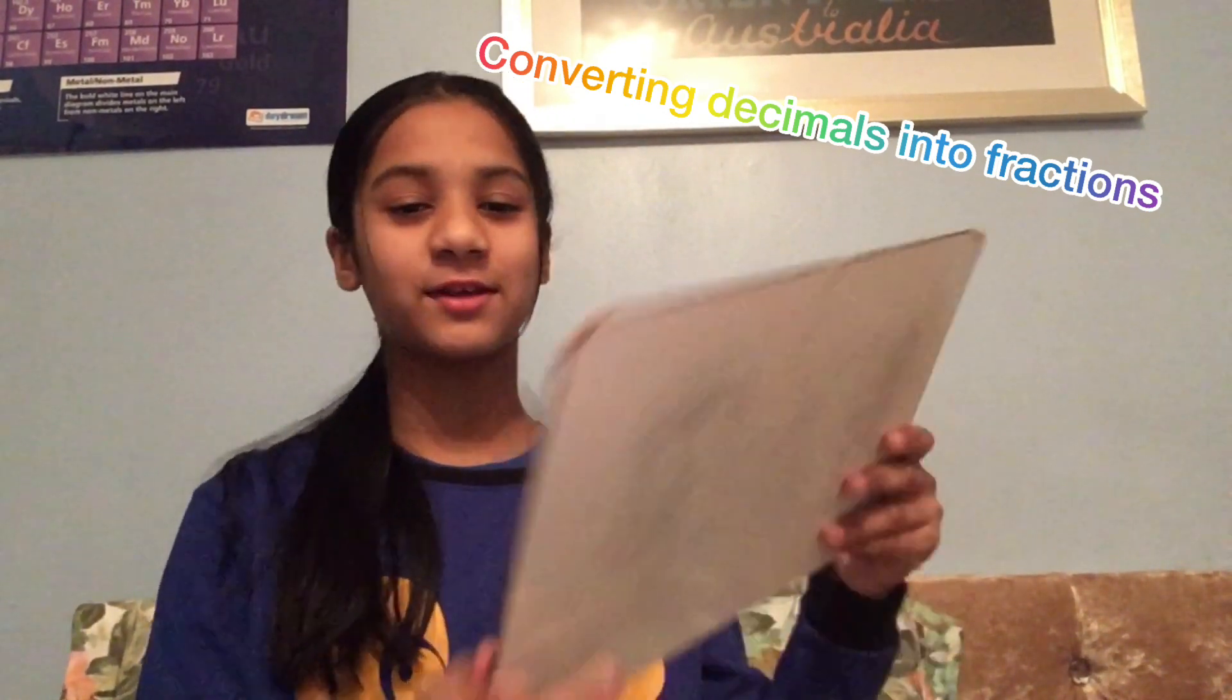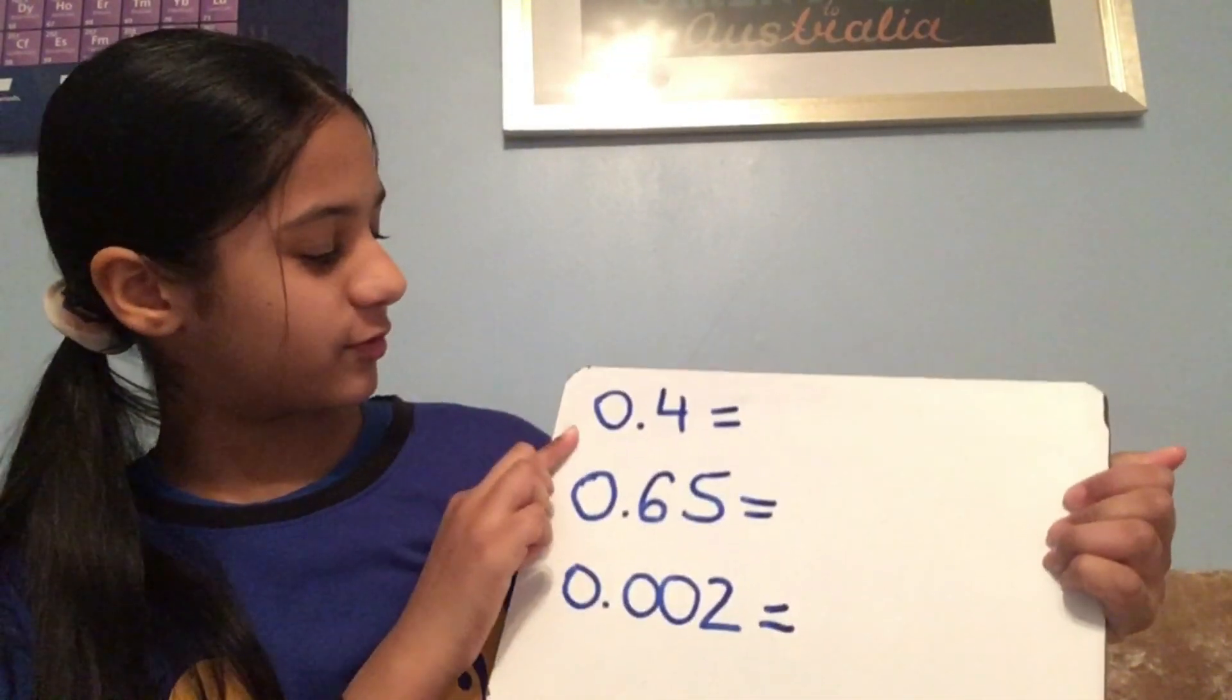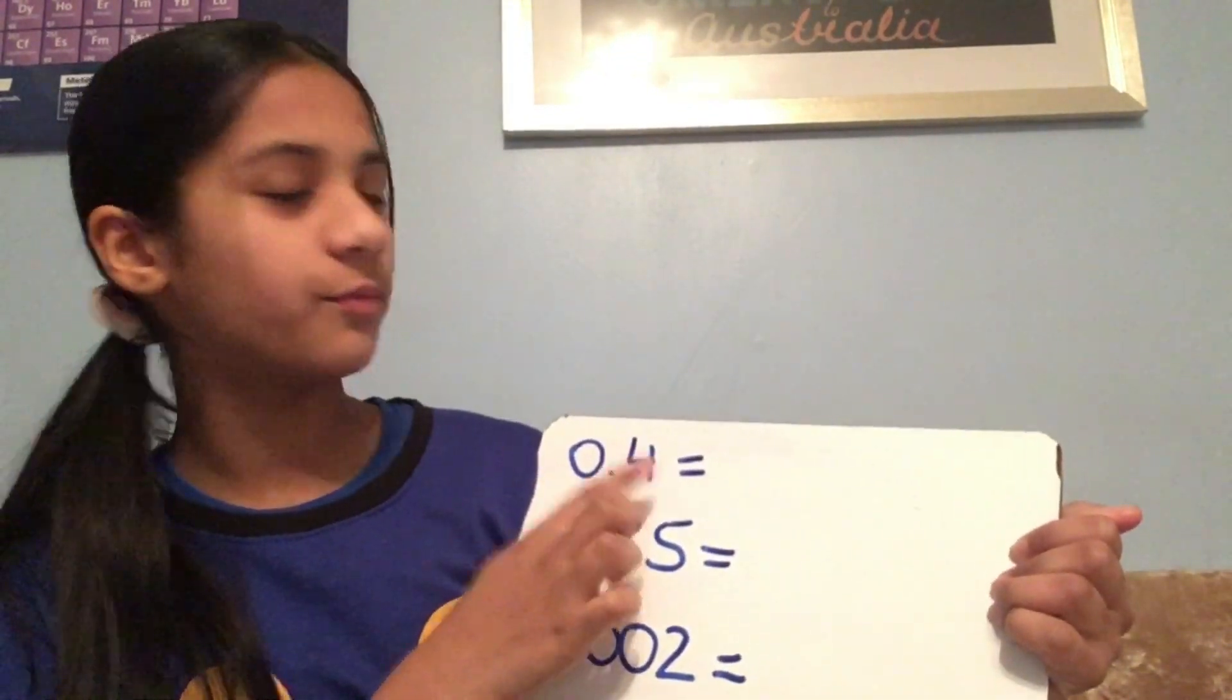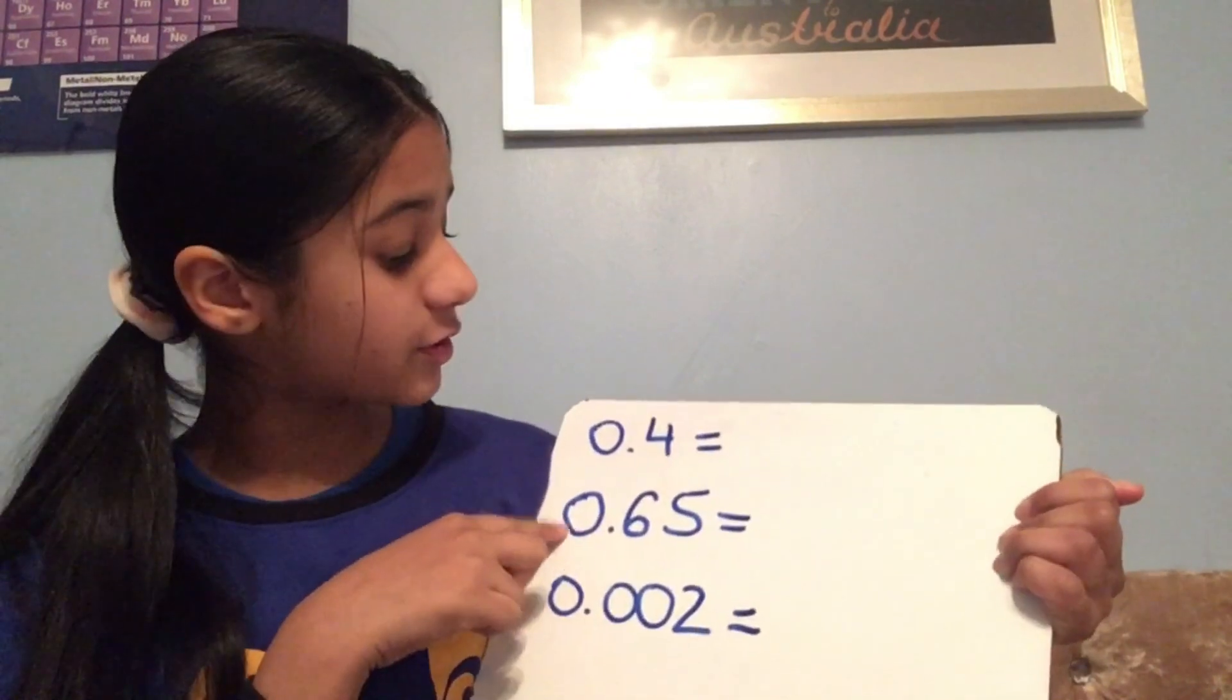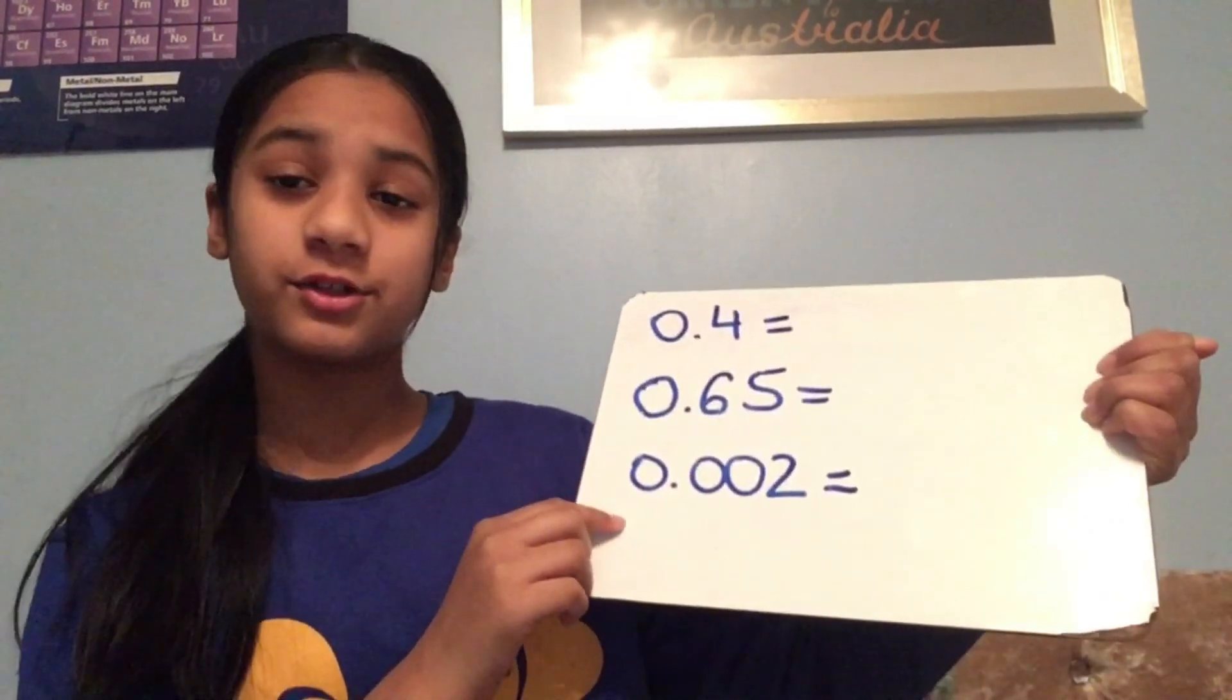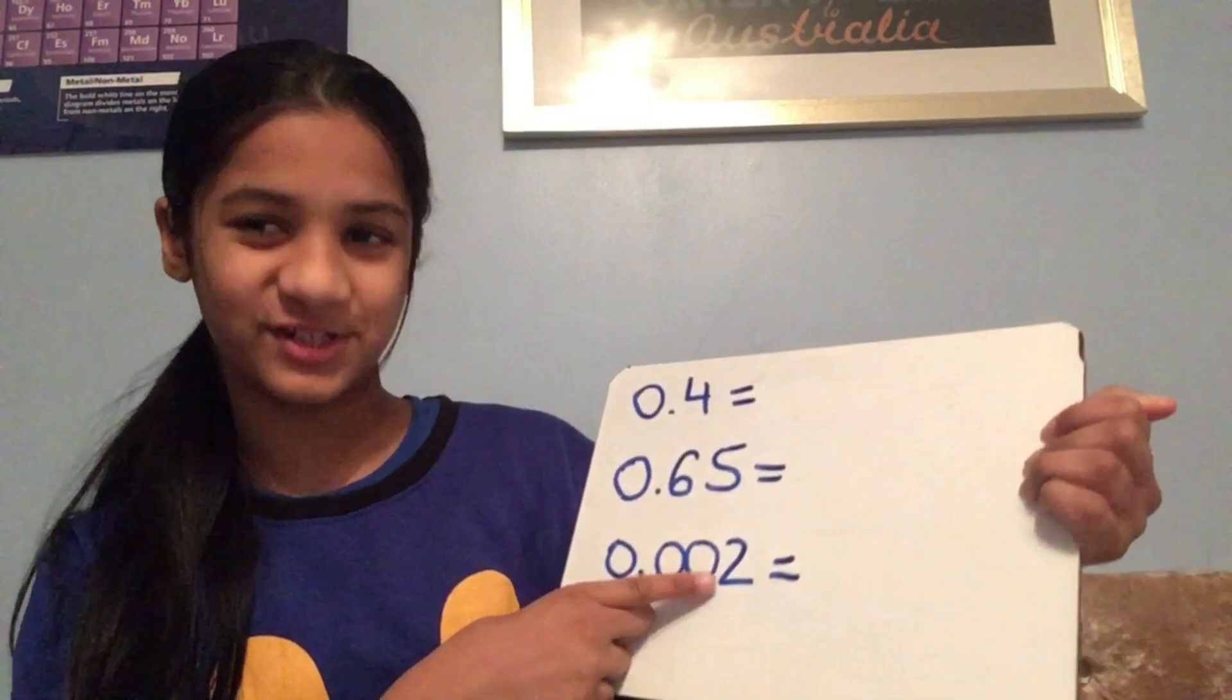Now, I've got some examples here. For example, 0.4 equals, 0.65 equals, 0.002 equals.